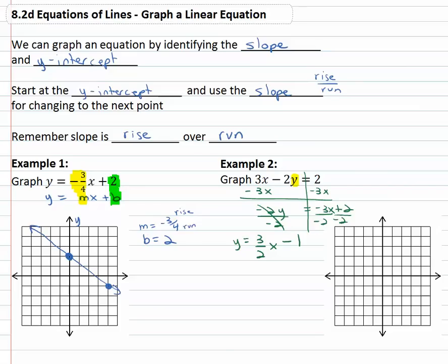Now we've solved for y, we put it into slope intercept form of y equals mx plus b. And now we can quickly identify the slope m is three halves. And we can also quickly identify that b, the y-intercept is negative one.